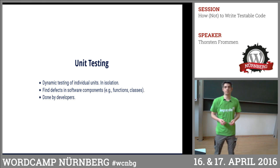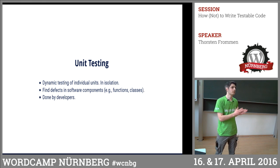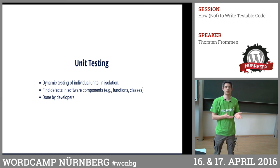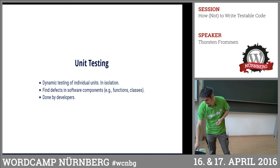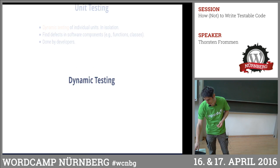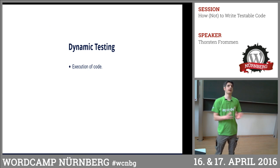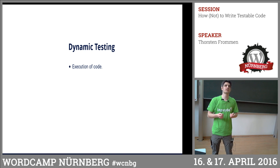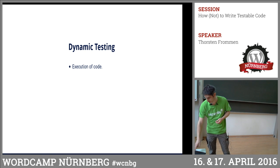Unit testing is usually done by developers — either the person who wrote the code writes the unit test, maybe even before the code itself, or someone else from the development team. Unit testing is dynamic testing, which means I have code and I actually execute it. The other thing is static testing, which is just reading the code — tools read it and there are measurements, syntax highlighting and similar things.